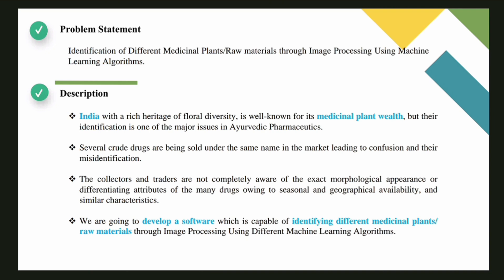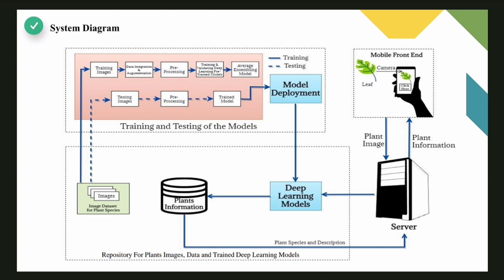As a result, we are going to develop a software which is capable of identifying different medicinal plants or raw materials through image processing using different machine learning algorithms. In this project, we used three datasets, namely Malacue, Segmented Indian Leaf, and Swedish, which are then combined together to form an integrated dataset.